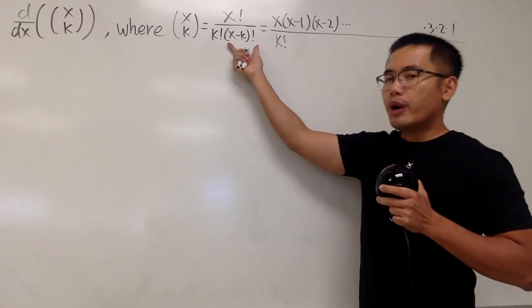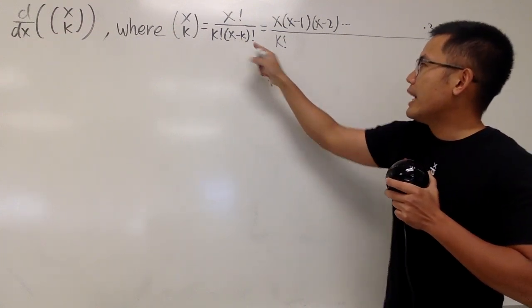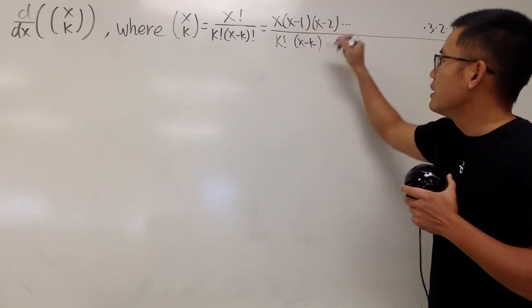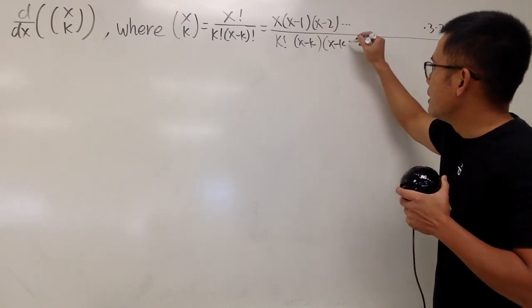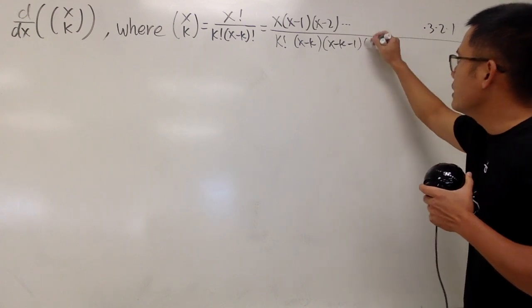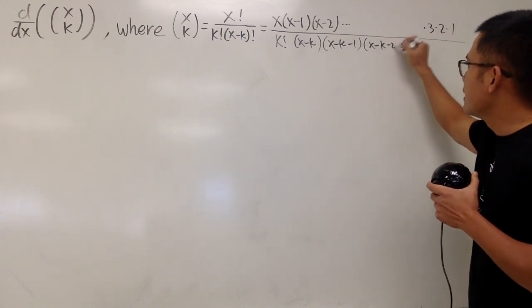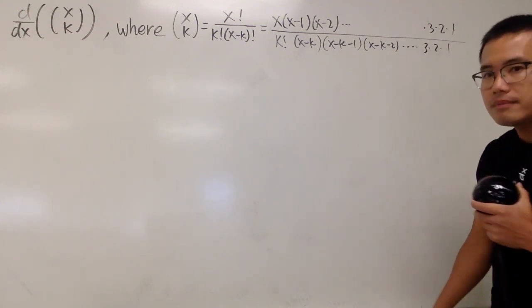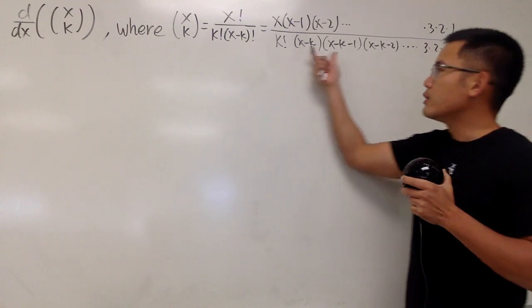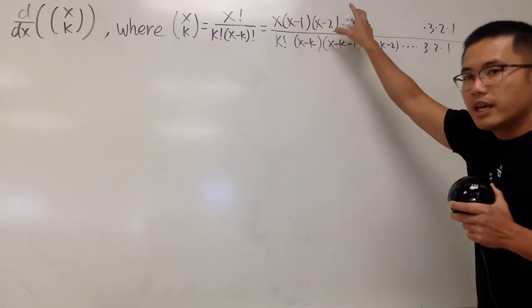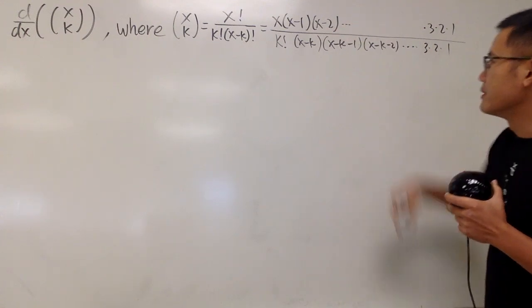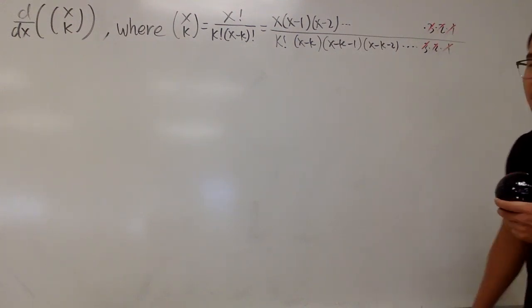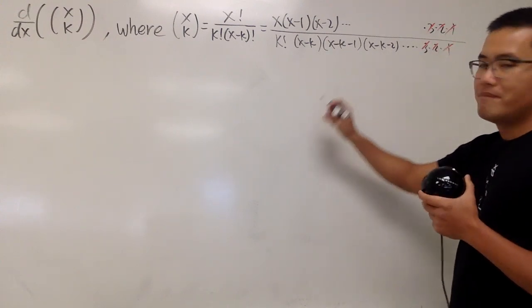Because if we break down this, when we do that, we will end up with x minus k for the first factor. And then the next one is x minus k minus 1. It goes down by 1, and then it goes down by another one, so it's minus 2. So on, so on. And then 3, 2, 1.